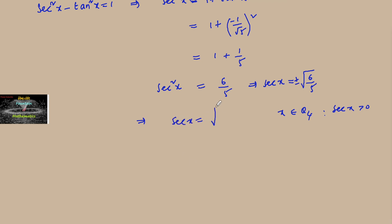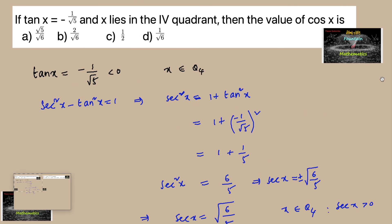So sec x equals plus root 6 by 5, or we can write cos x equals root 5 by 6, which is equal to root 5 by root 6 positive. So we can go with the first option, cos x equals root 5 by root 6.